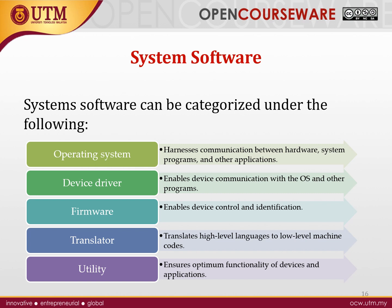The first main software type is system software, which has five main categories: the operating system, which manages communication between hardware, system programs, and applications; device drivers, which enable device control and identification; translators, which convert high-level languages to low-level machine code; and utility software, which ensures optimum functionality of devices and applications.